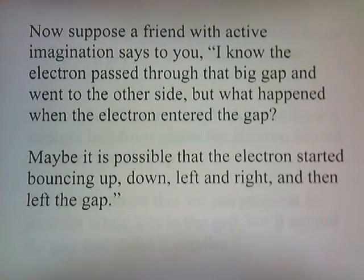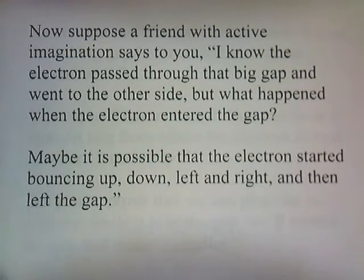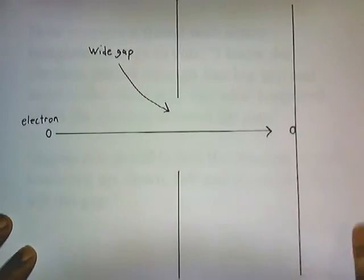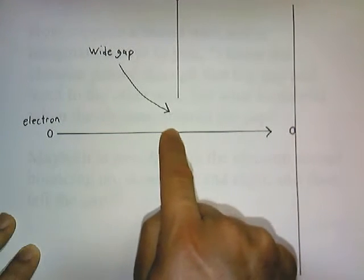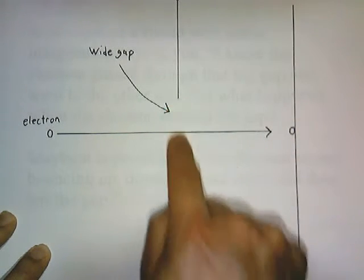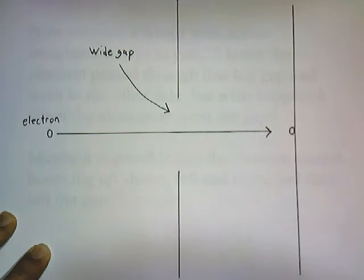Suppose a friend with a very active imagination says to you: I know the electron passed through that big gap and went to the other side. But what happened when the electron entered the gap? Maybe it's possible that the electron started bouncing up and down, left and right, and then left the gap. What this friend is suggesting is that when the electron went through, once it reached the gap, since we can't see it, it may have started bouncing up and down or moving all around and then continued its path.